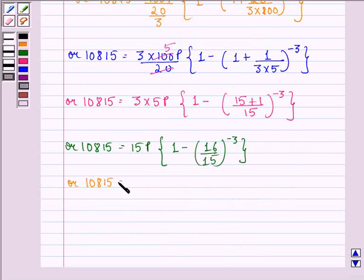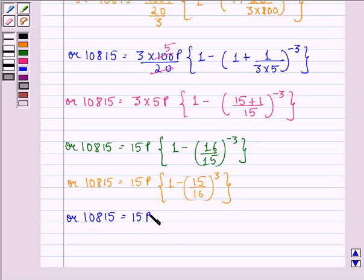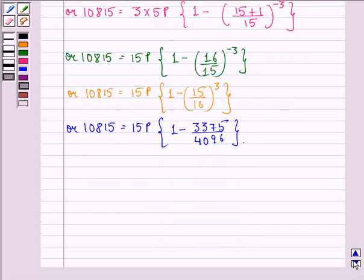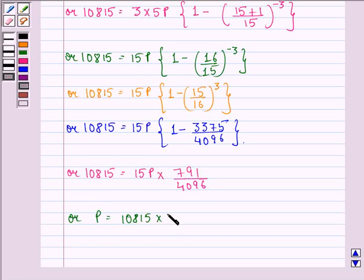Or 10,815 equals 15P into 1 minus 15 by 16 to the power 3. Or 10,815 equals 15P into 1 minus... cube of 15 is 3,375 divided by cube of 16 that is 4,096. Or 10,815 equals 15P multiplied by 721 divided by 4,096. Or P equals 10,815 multiplied by 4,096 divided by 15 into 721.